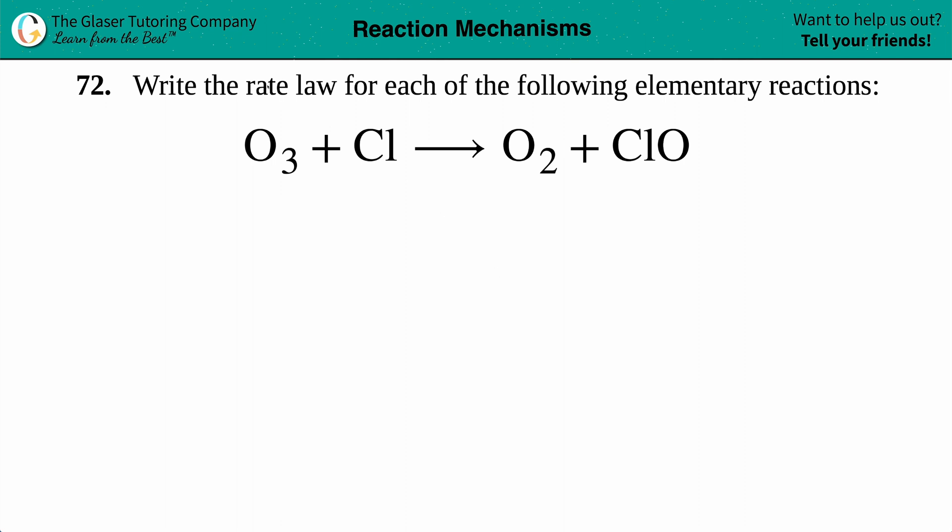Number 72: Write the rate law for each of the following elementary reactions. We have O3 plus Cl yields O2 plus ClO. Okay, from this balanced equation—always make sure it's balanced—but it looks pretty balanced to me. From a balanced equation we just have to write a rate law, and they give us a huge heads up.